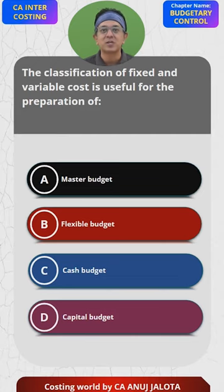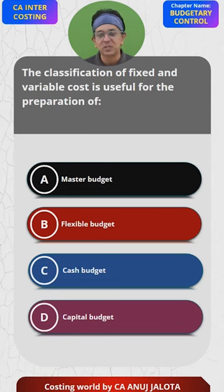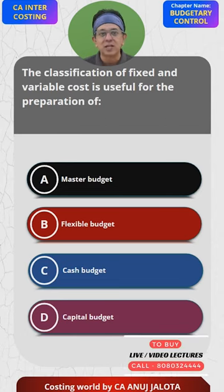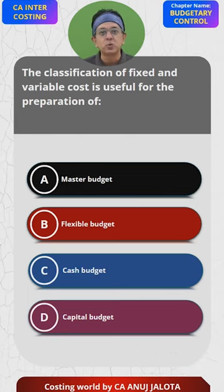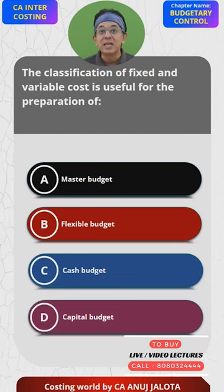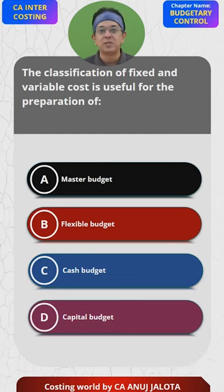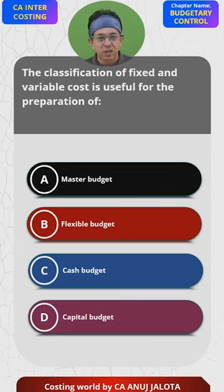The master budget is basically your estimated final account that has got nothing to do with fixed and variable cost. In a cash budget we only record the inflows and outflows — we don't try to demarcate variable or fixed cost. Capital budget is just for capital expenditures, but in flexible budgets we try to have the demarcation between fixed and variable expenses.